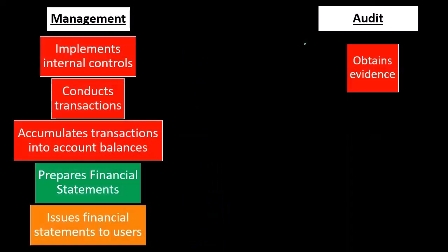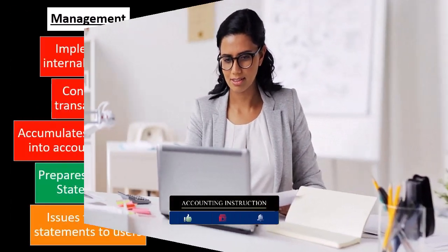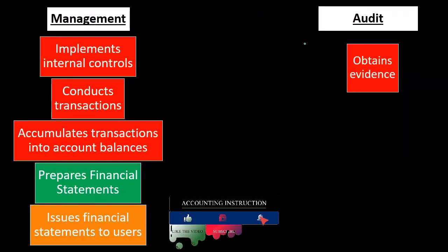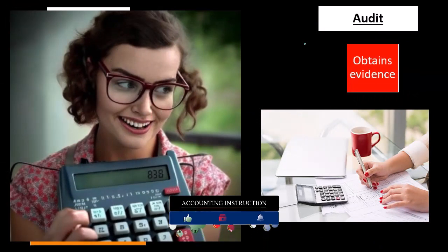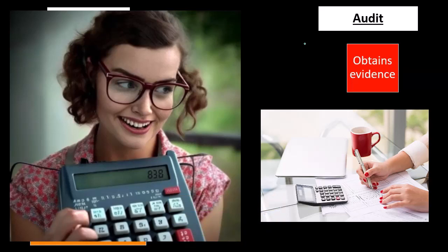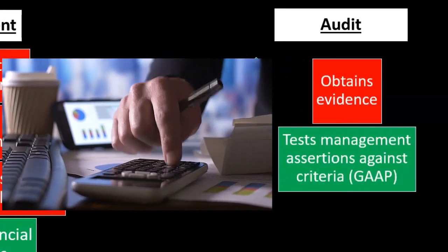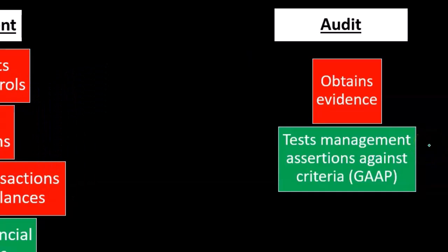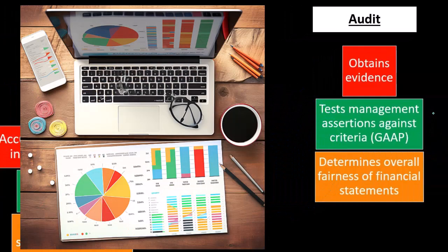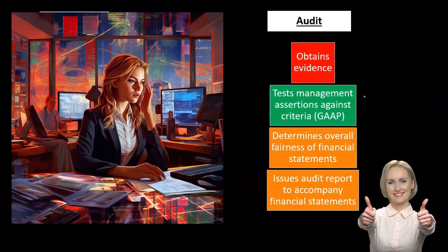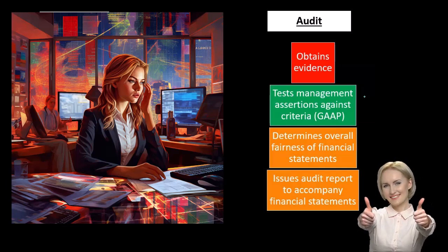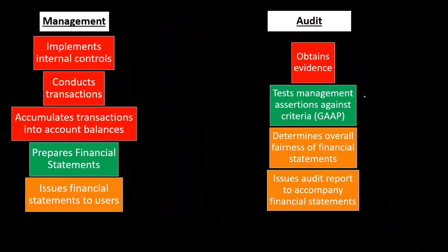The auditor's goal is not to judge whether the company is doing well financially, but to determine whether the financial statements reflect what actually happened in accordance with the rules claimed — typically GAAP. Tests are put together based on evidence, management's assertions are tested against the criteria, and then the auditor issues an audit report expressing an opinion on the financial statements.